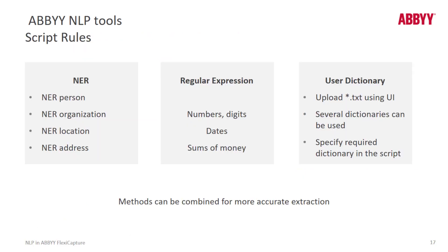Let's talk about NLP scripted rules. These are scripted rules applied only to NLP models. Scripted rules can use NER entities such as locations, organizations, or addresses. Sometimes data can be captured most easily using regular expressions, and we certainly support that via scripted rules. We can also use dictionaries — you might have several dictionaries containing data you're searching for, and a dictionary can be a TXT file containing all possible search strings. A really powerful feature is that we can combine these different technologies within our scripted rules.